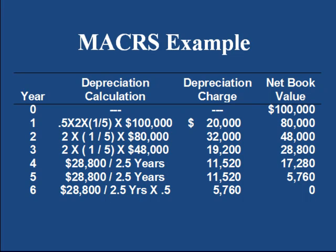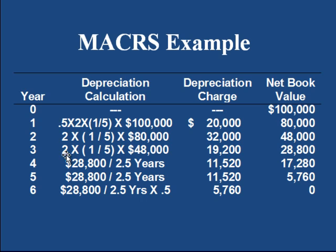We can calculate the first 3 years of depreciation, but another thing is the half-year convention. In the first year, we are taking 50% of the depreciation by multiplying the value with 0.5, and also in the last year. So half-year convention is fulfilled, and there is a shift of depreciation method from double declining to straight line. In the first 3 years, we use double declining method, and in the last 3 years, we use straight line method.